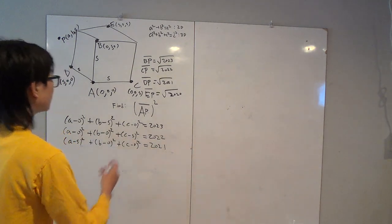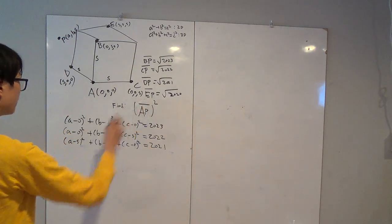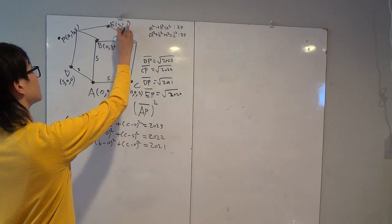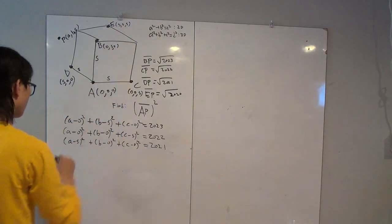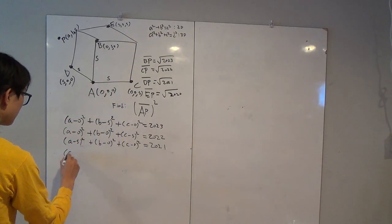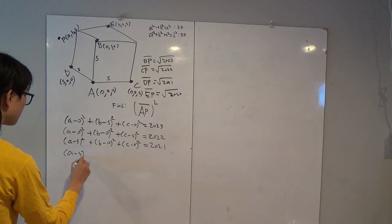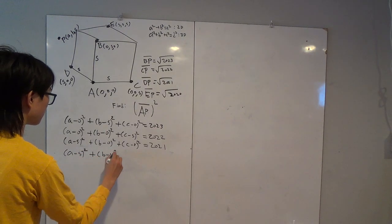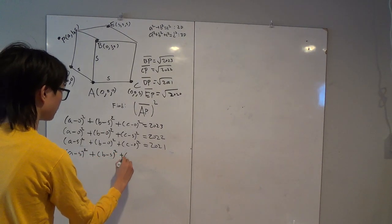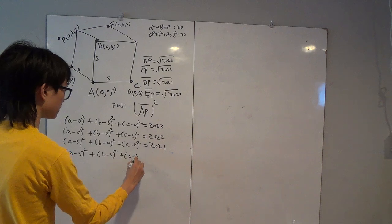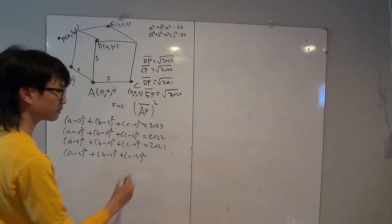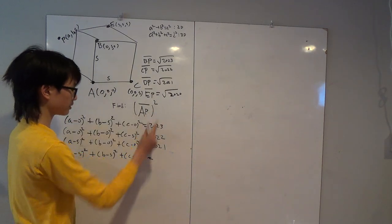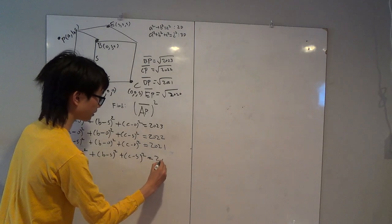And finally, for EP — since each of E's coordinates are S — we can write: (a−S)² + (b−S)² + (c−S)² = 2020.